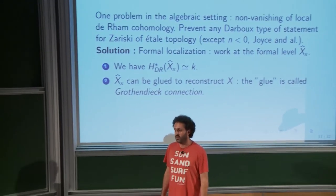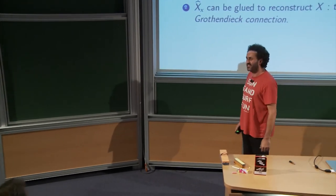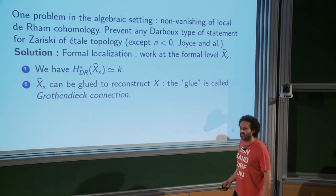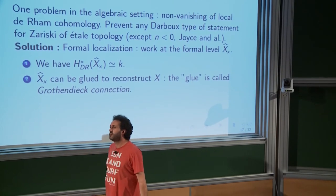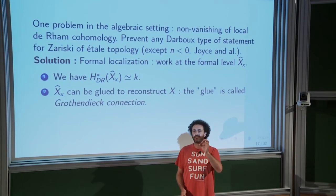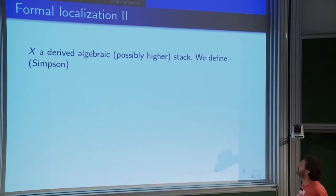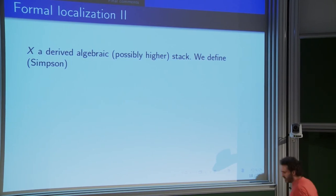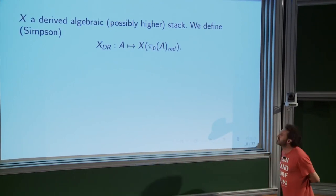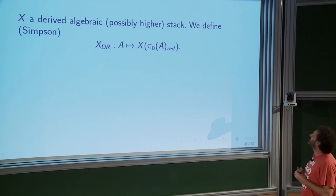The Grothendieck connection — or perhaps Fedosov's connection — is defined via the de Rham stack X_dR. This is the functor sending a DG algebra A to the points of X with coefficients in the reduced part of H^0(A), identifying all infinitesimally close points. Simpson called this the de Rham groupoid. There is a projection map p: X → X_dR, and objects living over X_dR should be thought of as carrying a flat connection.